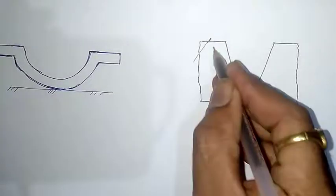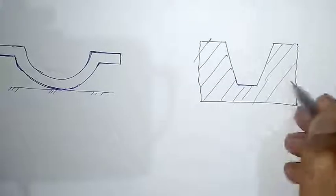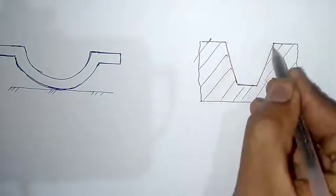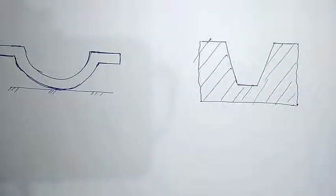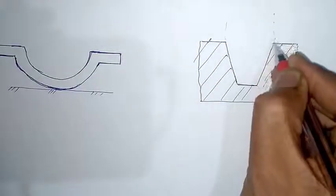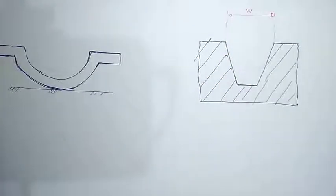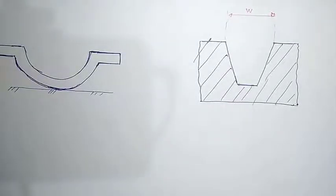This is the component which has a slot in it. This is the width that I want to measure — let's mark it as W. So this is W which I want to measure, and I want to measure it with simple instruments like a sphere and a height gauge. With one sphere and one height gauge, I can measure this width. So let's check how to do it.